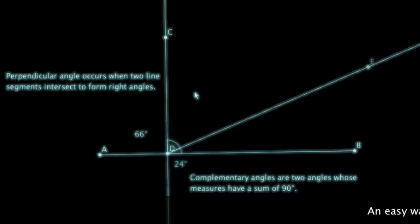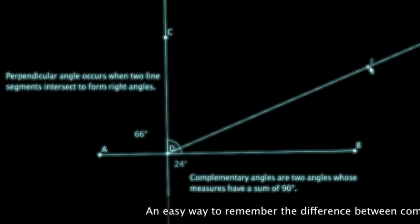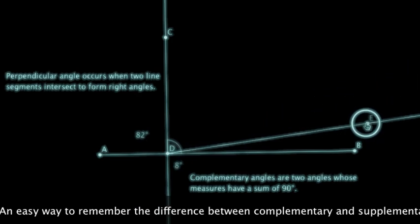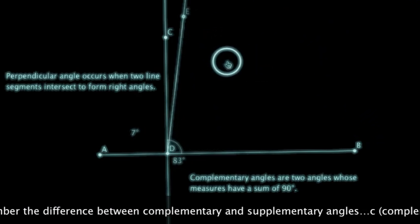A couple of things before we're finished here. Complementary angles are two angles whose measures have a sum of 90 degrees. So we have two angles here, and when you add up those sums, it's going to equal 90 degrees.